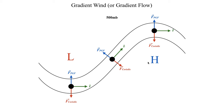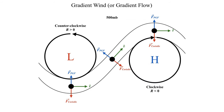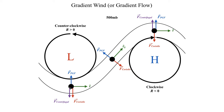Now we account for the curvature of the flow. Using the sign convention from lecture 5: counterclockwise flow gives positive curvature at the trough base, and clockwise flow gives negative curvature at the ridge apex. Since centrifugal force points away from the center of the circle, in the trough base it points in the same direction as the Coriolis force, while in the ridge apex it points in the same direction as the pressure gradient force.